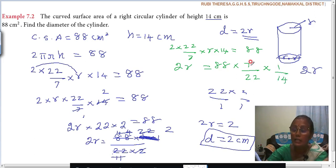I told you, calculation according to your ability you can do it, I said. 1 7 is 7, 2 7s are 14. 1 22 is 22, 4 22s are 88. 4 into 22, 88. Then 1 2 is 2, 2 2s are 4. 2R is equal to 2. That is nothing but D equal to 2.